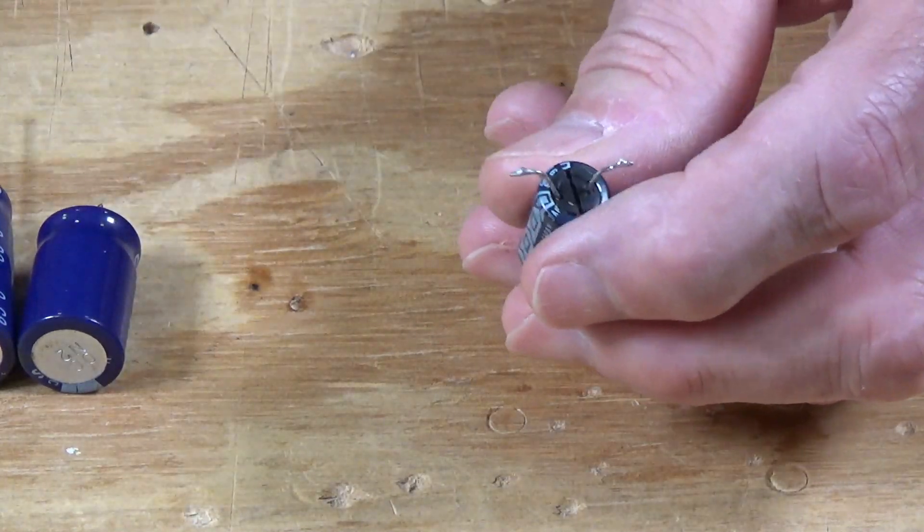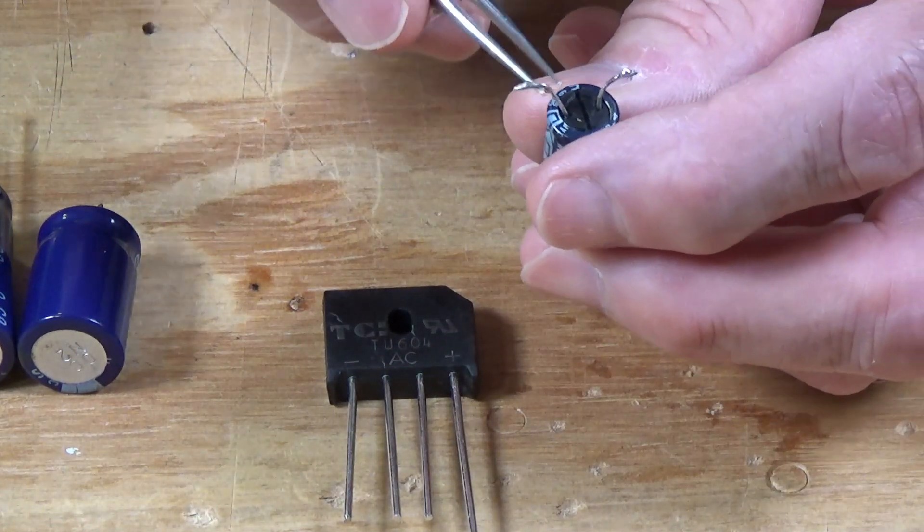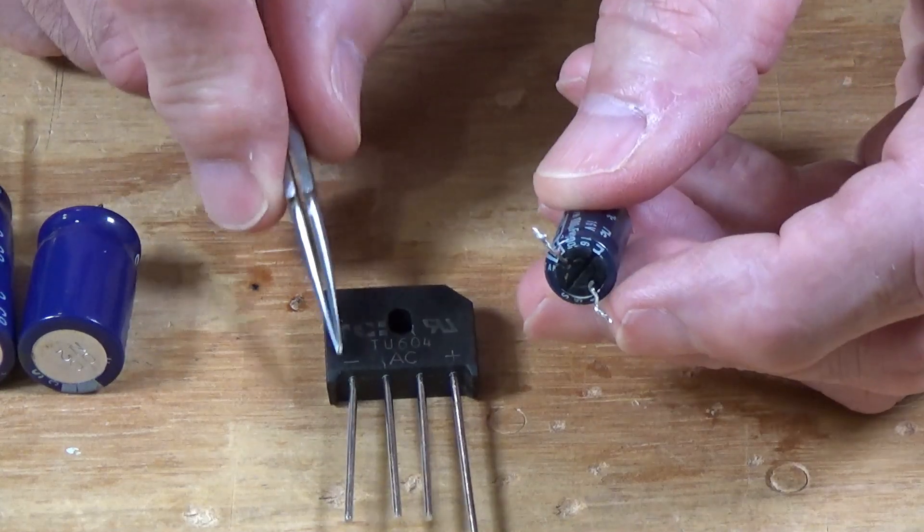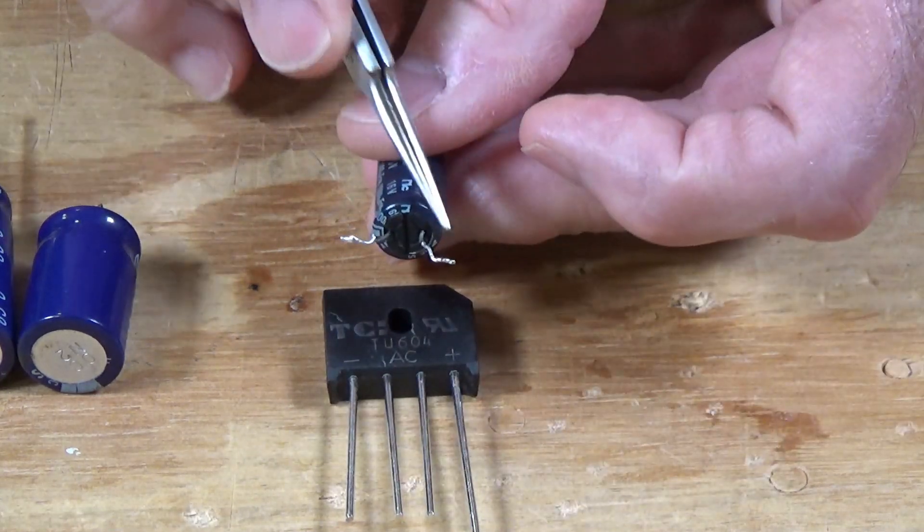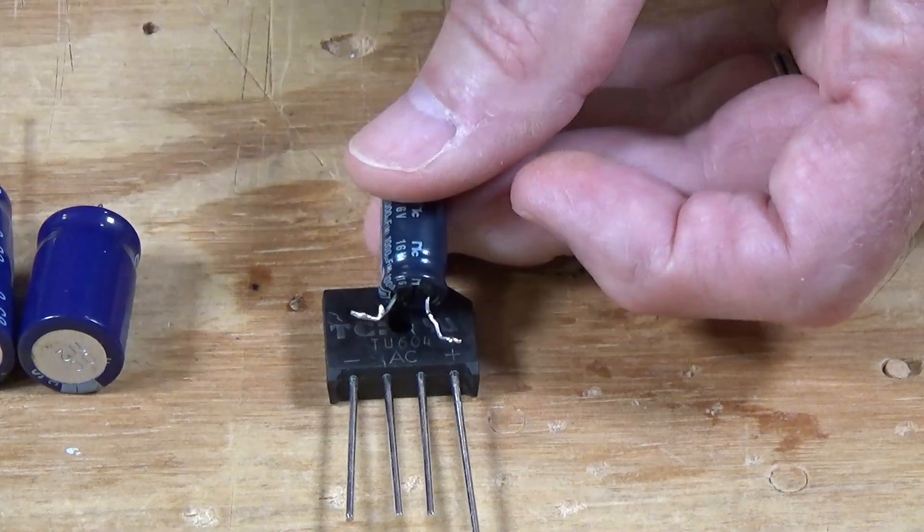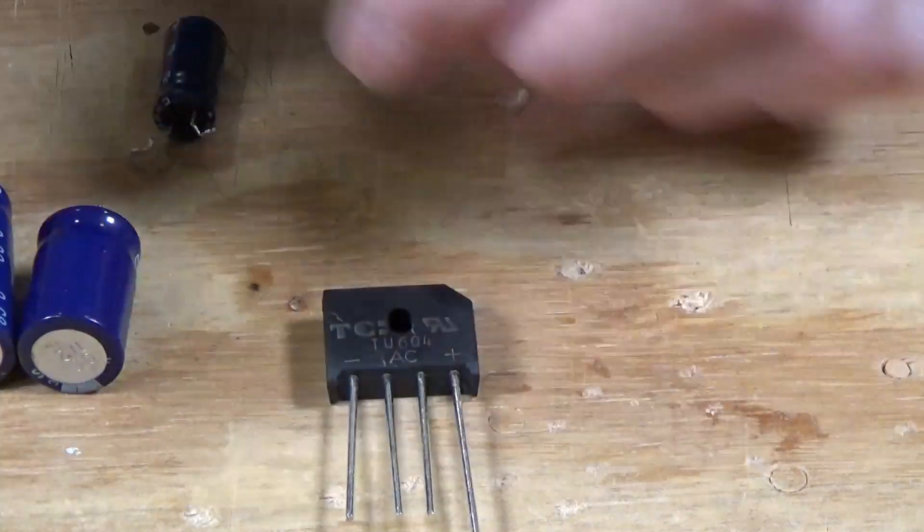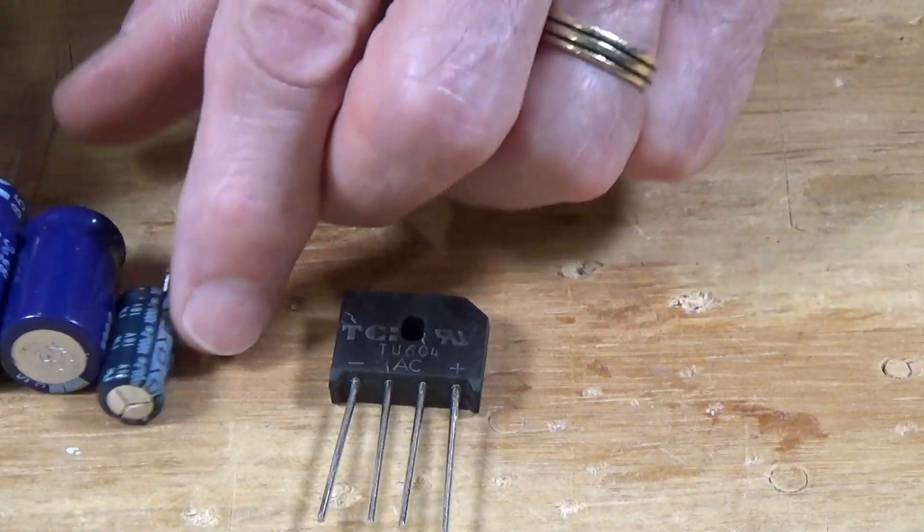So on your bridge rectifier, then, the negative wire goes to the negative leg, the positive wire goes to the positive leg. Very straightforward, easy to put together. These things are very inexpensive.